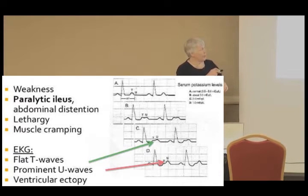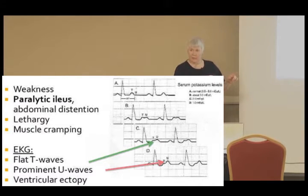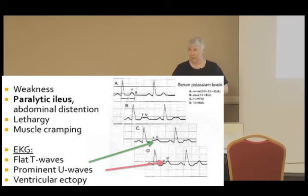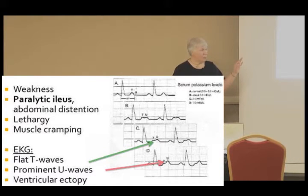At waveform B, we're at about a potassium of 3. By the time we're at C, potassium is down to 2 and that U wave is higher than the T wave. By waveform D, we have a potassium of 1. Once we get down into the 1 zone, that U wave is so elevated we're at risk of mistaking it for the T wave.